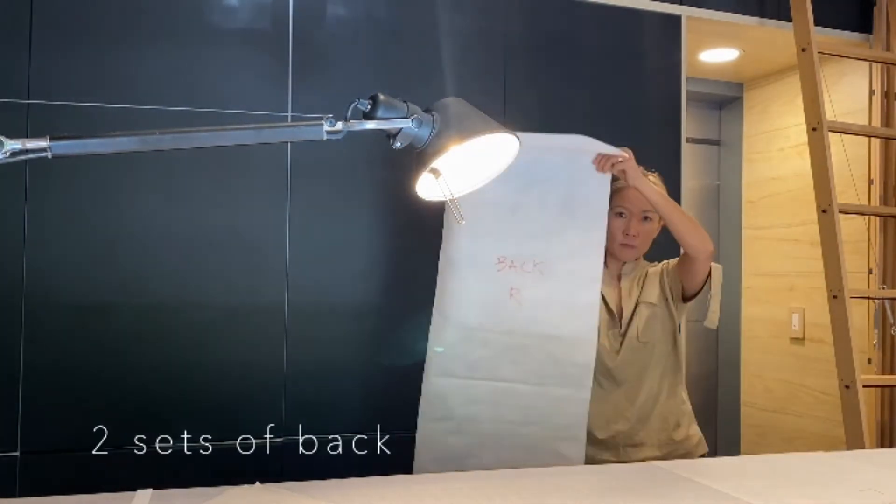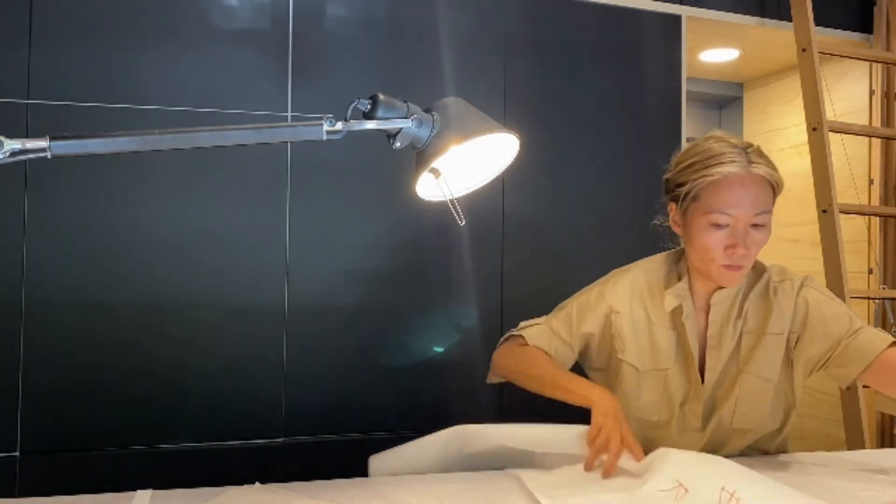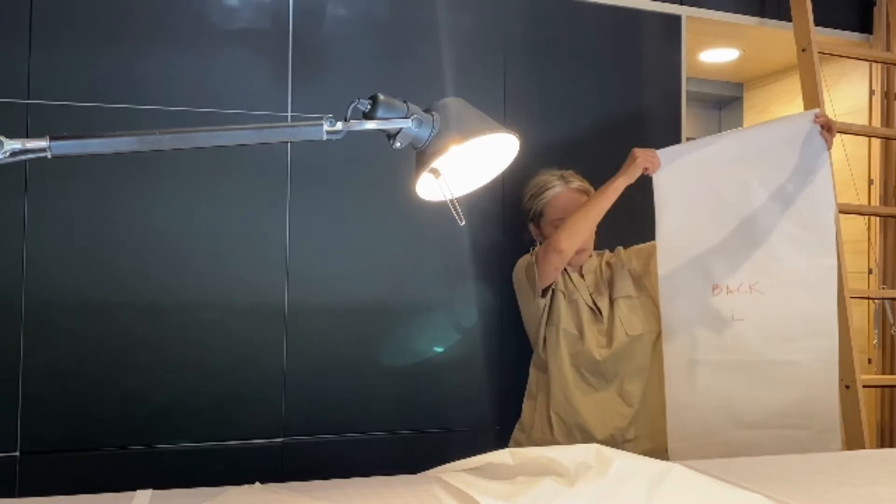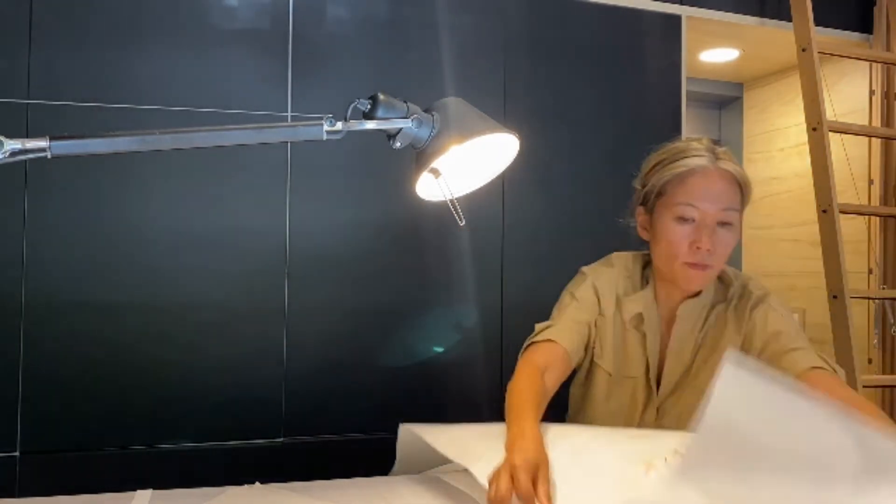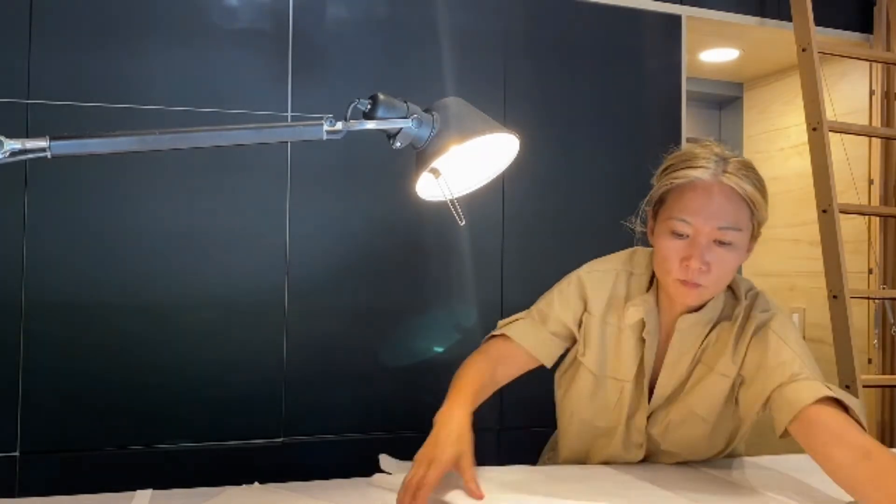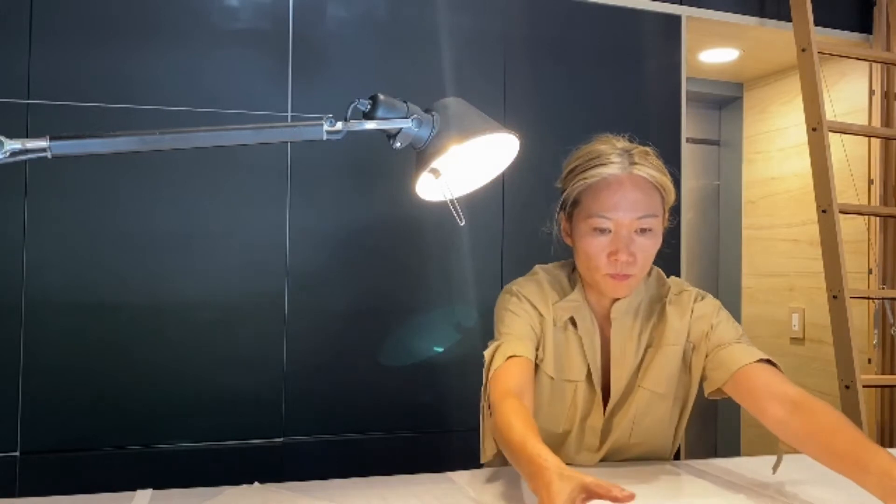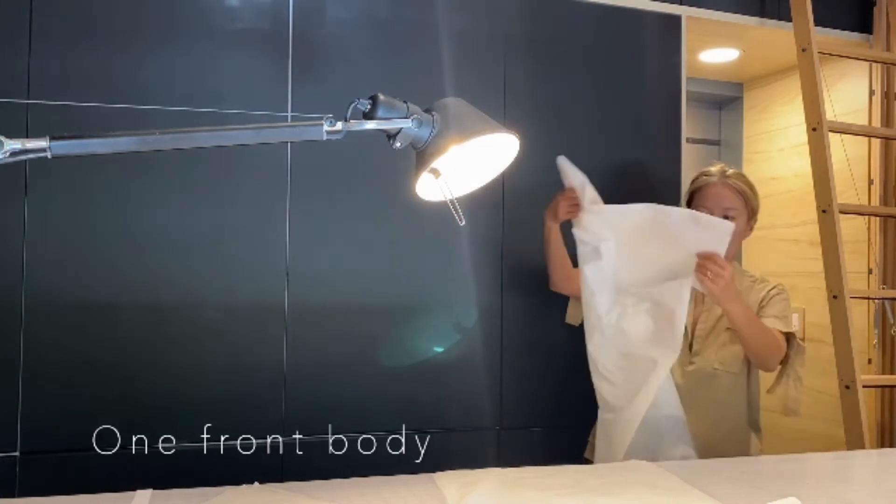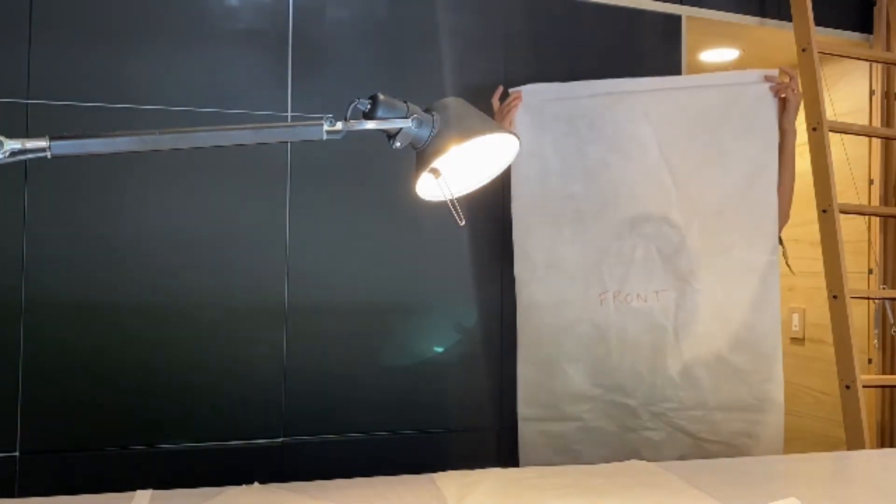We also have two sets of back pieces that are pre-cut. And just a reminder to remember which side of the fabric you should be using as the outside. It should be waterproof. So if you're having a hard time figuring that out, you can touch the side and it'll have a coating on it. Or you can test it by dropping some water on top of the outside of the fabric. If it doesn't permeate the fabric, then you're using the correct side. We also have our front body piece.